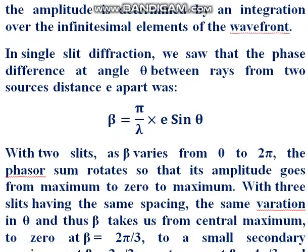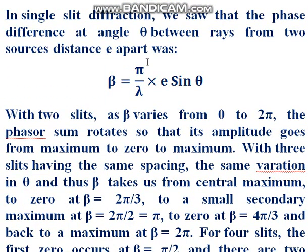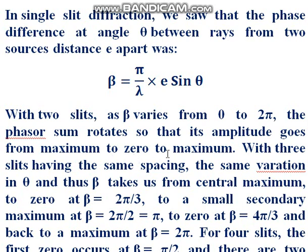In the previous video lesson, especially in the single slit diffraction, we discovered the phase difference between rays from two sources a distance e apart: beta is equal to π over λ times e sinθ. When there are two slits, beta varies from 0 to 2π, and the phasor sum rotates so that its amplitude goes from maximum to zero and back to maximum.